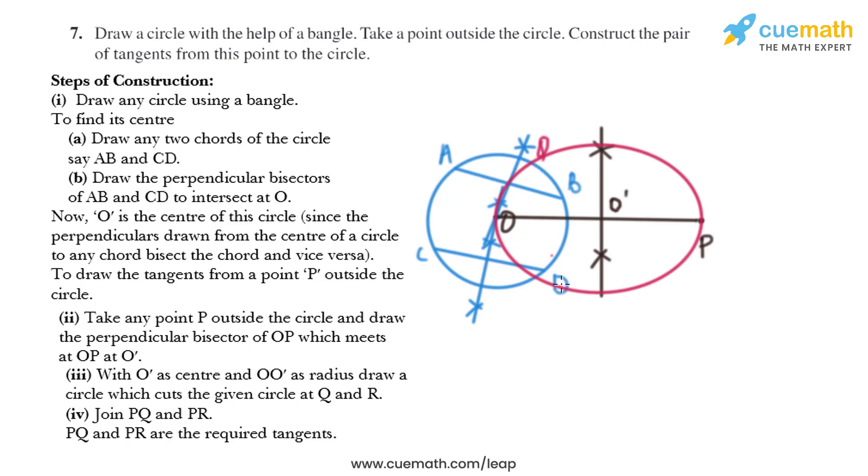Then after that, we need to join PQ and PR. So we'll draw a line to join PQ and PR. PQ and PR are the required tangents.